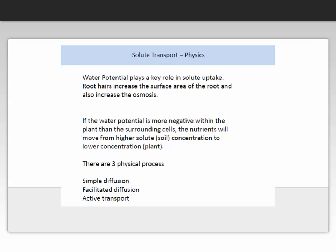Water potential plays a key role in solute uptake. Root hairs increase the surface area of the root and also the surface area of osmosis. If the water potential is more negative within the plant than the surrounding cells, the nutrients will move from a high solute concentration to a lower concentration in the plant. It is important that you understand the concepts of water potential, and if you need more assistance on this concept, you can look to the tutorials for help.